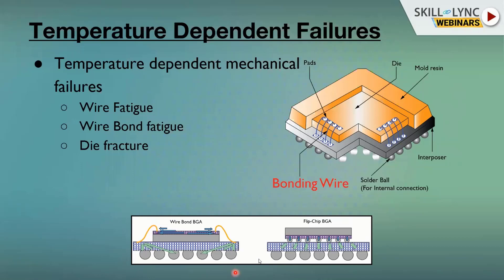We have two types of BGA: wire bond BGA and flip chip BGA. These are typical electronic terms, so mechanical students should not get confused. In wire bond BGA, the die is connected to the substrate with wire. In flip chip BGA, cyclic loading occurs in the shoulder bolts, making joints loose or starting fracture at the shoulder bolts. This is a mechanical dependent failure because of higher temperatures.